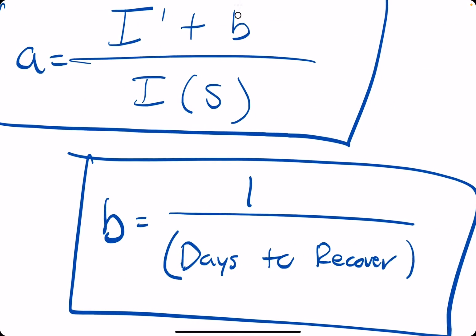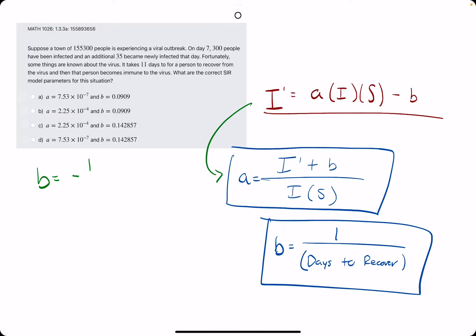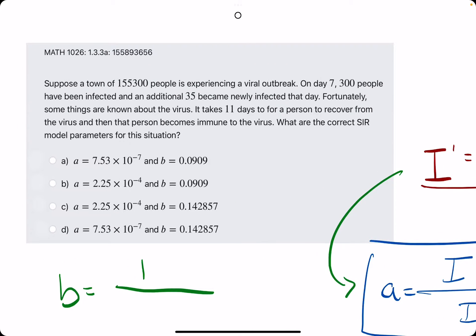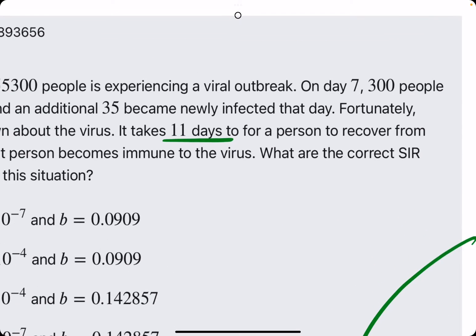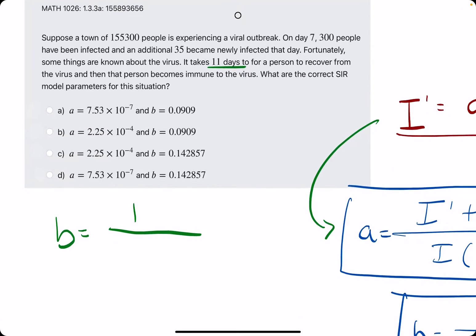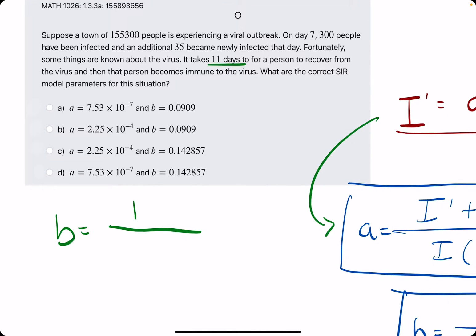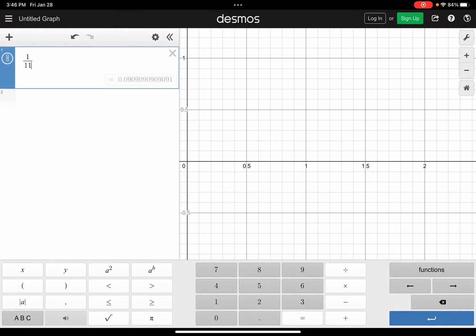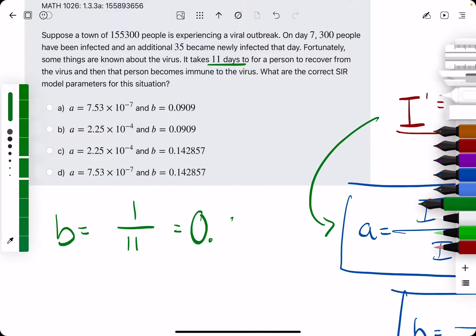So B is 1 divided by the days it takes to recover. So starting with B, 1 divided by, it looks like it says 11 days for a person to recover. So 1 divided by 11 should be B. 1 divided by 11 is equal to 0.0909, it looks like they use 0.0909.